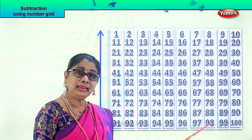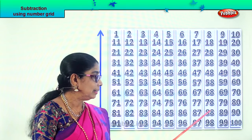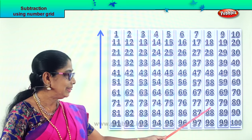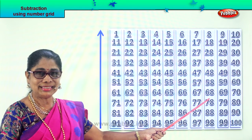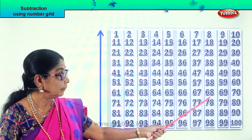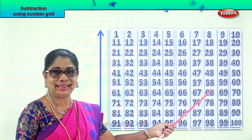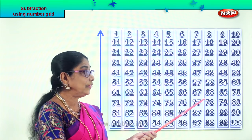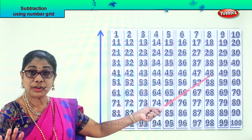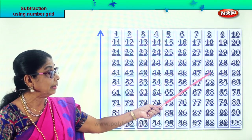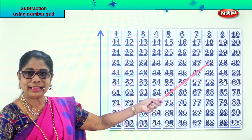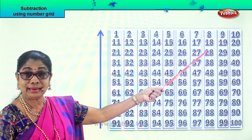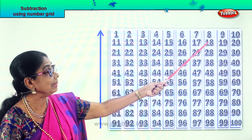Now let's look at here. From 98 you take away 10, you get 88. 88 take away 10 — 78. Very good. 78 take away 10 — 68. 68 take away 10 — 58. 58 take away 10 — 48. 48 take away 10 — 38. 38 take away 10 — 28. 28 take away 10 — 18.